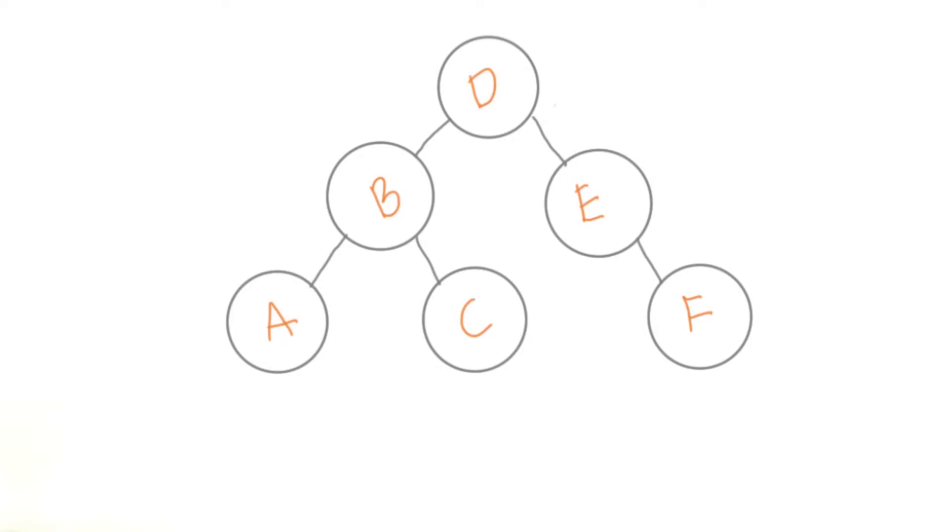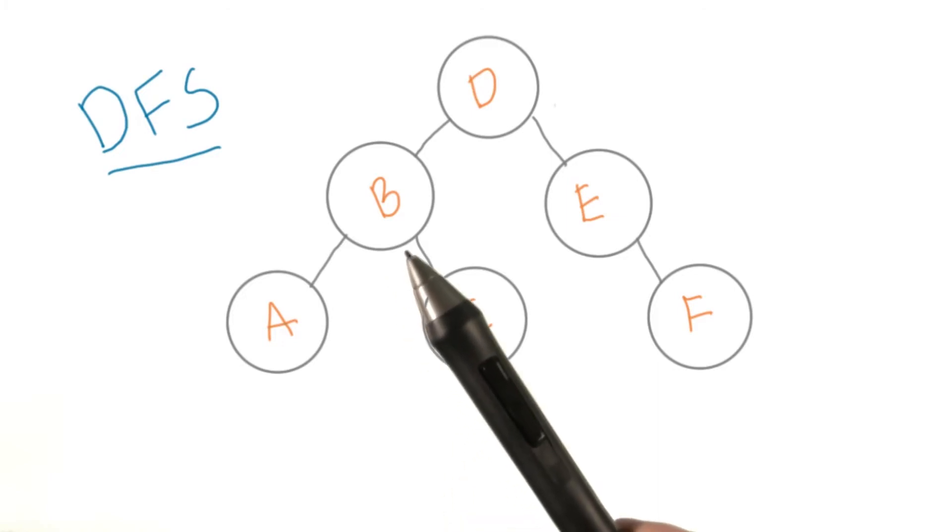There are two different broad approaches to tree traversal. One is called depth first search, or DFS for short. In DFS, the philosophy is, if there are children nodes to explore, exploring them is definitely the priority.